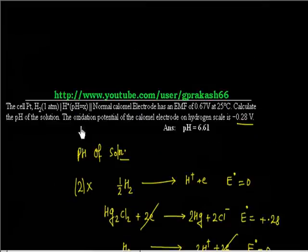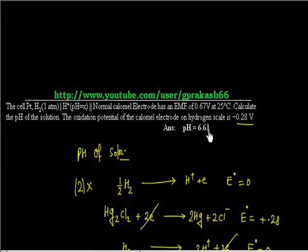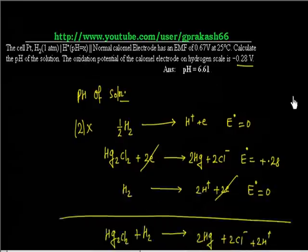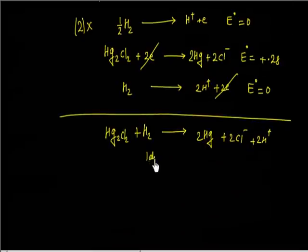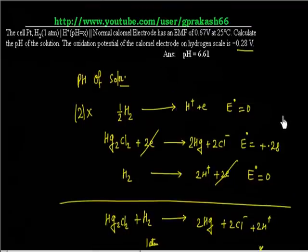These two species — Cl⁻ and H⁺ — are aqueous. The concentration of Cl⁻ would be given. H₂ is at 1 atmospheric pressure. The oxidation potential of the calomel electrode on hydrogen is −0.21, so we take −0.28 V. We will assume this is a standard calomel electrode, so Cl⁻ concentration is already included. H₂ is at 1 atm, and we have to calculate the concentration of H⁺, which is x. E_cell is −0.28.